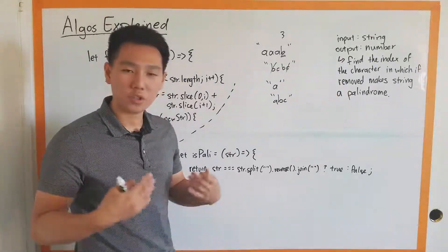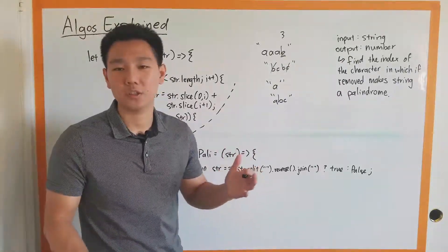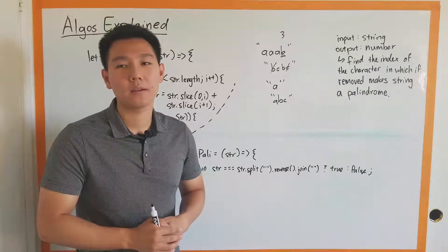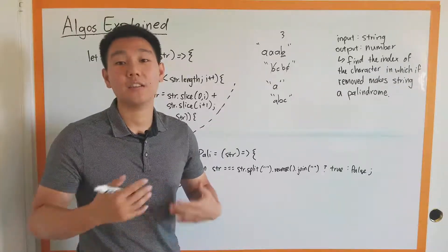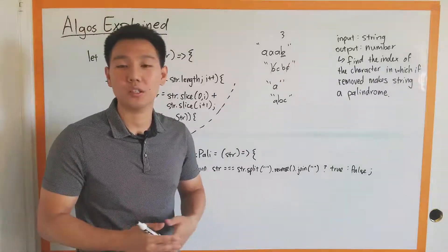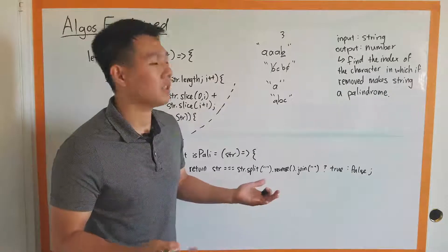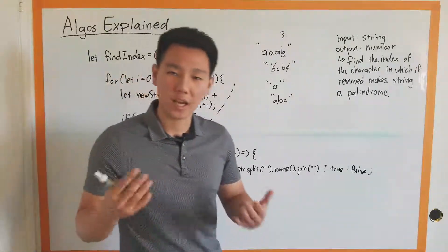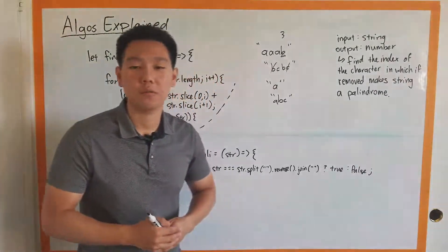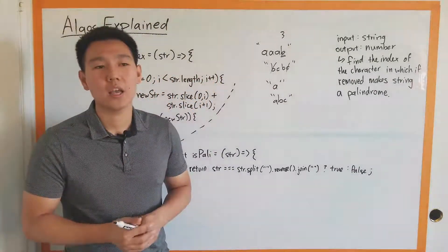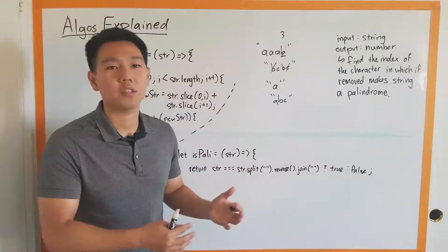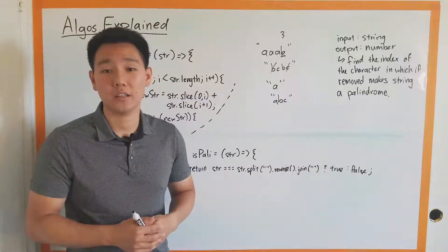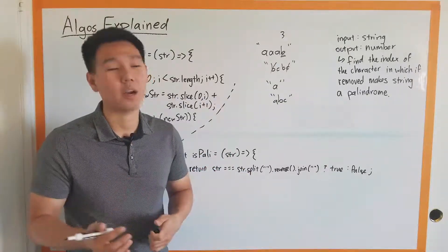Usually when there are multiple objectives that need to be accomplished before you can reach a final answer, that's a great indicator that helper functions make sense. You could always put it all in one function too, but if you break it out and use helper functions, it's definitely cleaner code and better practice.